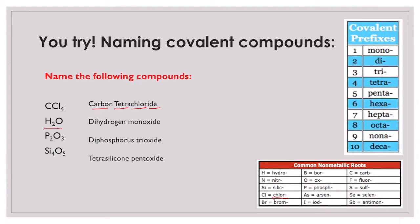The second compound is water, and normally you would just call it water, but for the purposes of learning these naming rules, we'll give it its formal name. We have two hydrogens, so I use 'di' - dihydrogen. Then I have oxygen, and there's only one oxygen, so I use 'mono'. Since 'mono' ends with 'o' and 'oxide' begins with 'o', we only need one 'o', so you say 'mon' then 'ox' then '-ide'. So the formal name is dihydrogen monoxide.